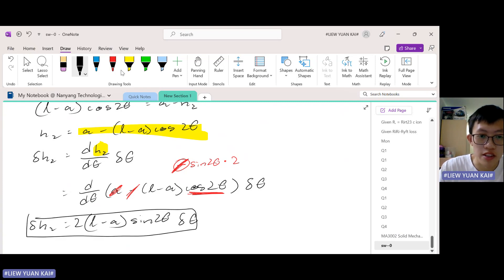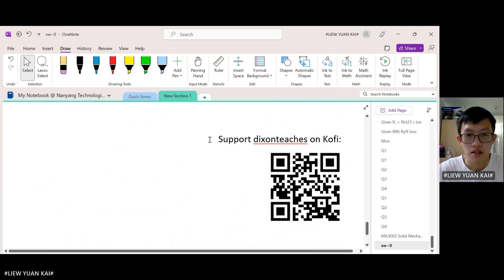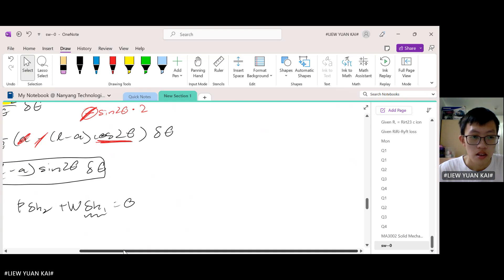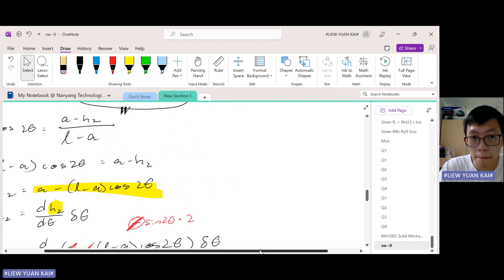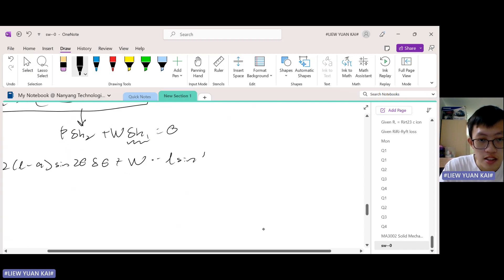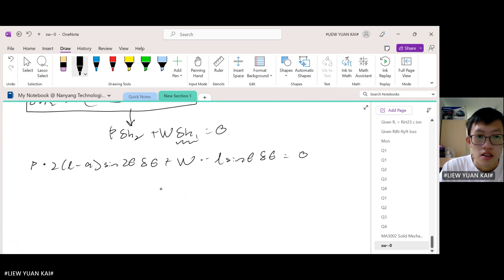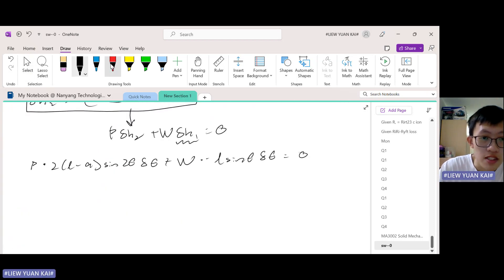Now we can substitute this into the PVD formula. So we substitute into here: we get P times 2(L minus A) sine 2 theta delta theta plus W times—what is my dh1? dh1 is negative L sine theta delta theta.